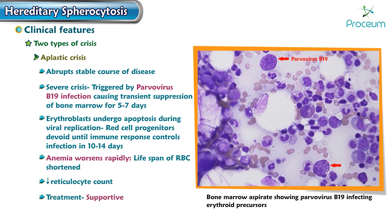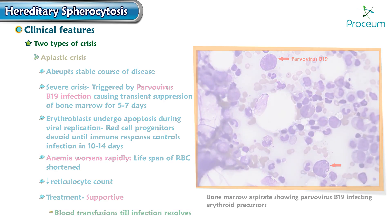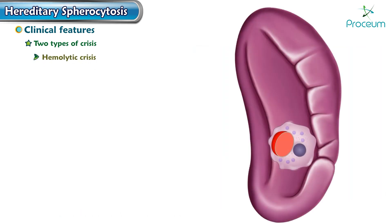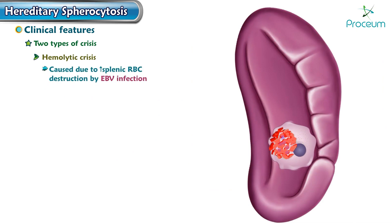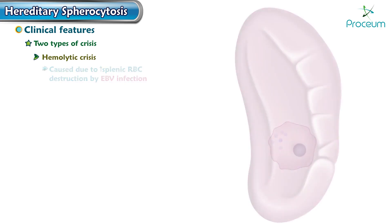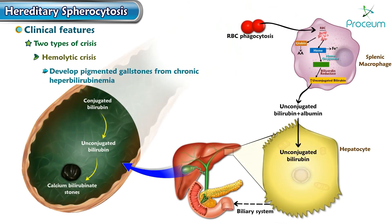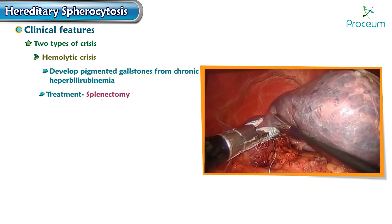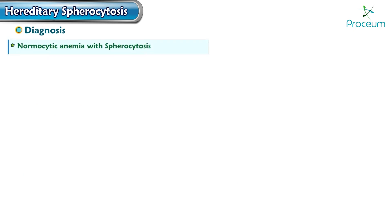The treatment for aplastic crisis is supportive blood transfusions until the infection resolves. Hemolytic crisis is caused by increased splenic RBC destruction triggered by an Epstein-Barr virus infection. About half of these patients develop pigmented gallstones from chronic hyperbilirubinemia. Splenectomy is the treatment of choice, but spherocytes will persist in the blood even after splenectomy.